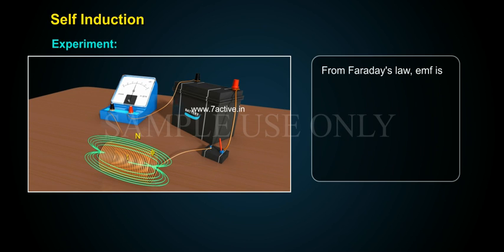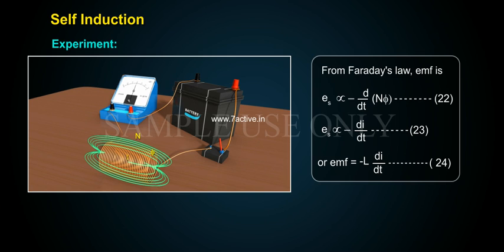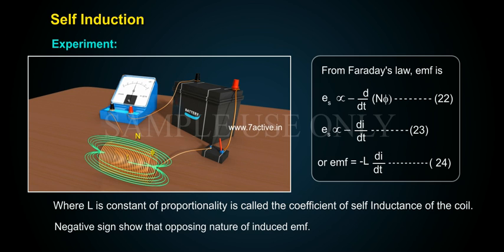From Faraday's law, EMF (Es) is proportional to minus the derivative of n·phi, which gives Es proportional to minus di/dt. Or, EMF equals minus L·di/dt, where L, the constant of proportionality, is called the coefficient of self-inductance of the coil. The negative sign shows the opposing nature of the induced EMF.